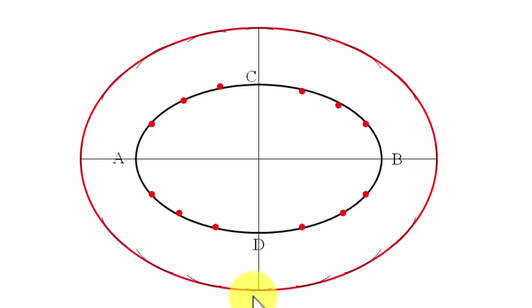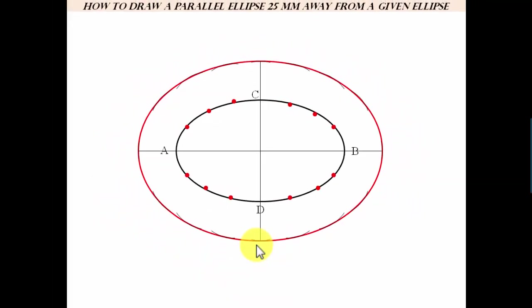That's exactly how a parallel ellipse 25 millimeters away from a given ellipse can be constructed.